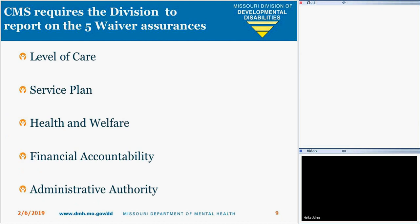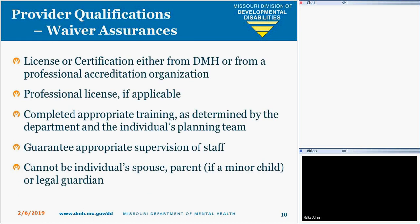CMS requires the division to report quarterly and annually to MoHealthNet. These five assurances address important dimensions of waiver quality, including ensuring that service plans are designed to meet participant needs and that effective systems are in place to monitor participant health and welfare. Regarding provider qualifications, either licensure and certification or an accreditation organization ensures compliance.